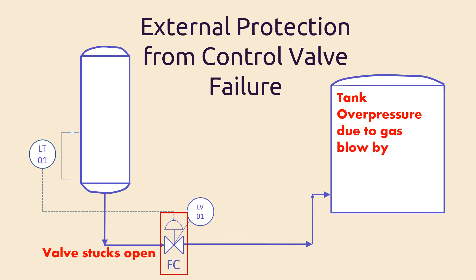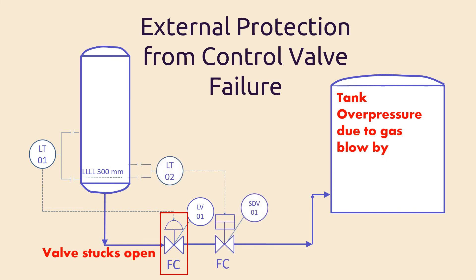In this case, we shall need to stop the fluid flow once the liquid level in the vessel reaches the low-low liquid level, let's say 300 millimeters. This can be done by installing a level transmitter on the vessel that sends a signal to an on-off shutdown valve to close it once the liquid level is 300 millimeters. So the scheme shall look this way. But in many cases, depending on shutdown protection may not be enough.